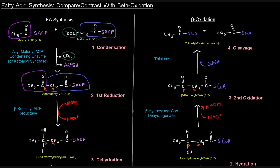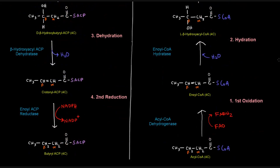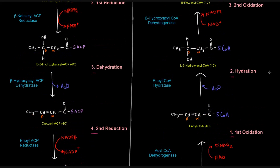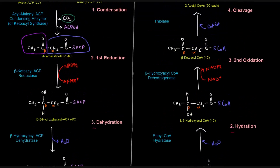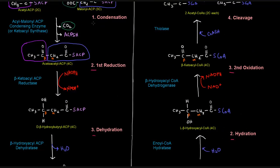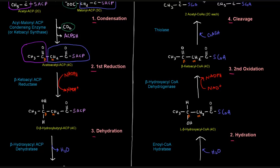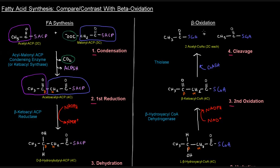Notice, for instance, that the result of fatty acid synthesis is we have an acyl-ACP, whereas in beta-oxidation, we start with an acyl-CoA. The difference in terms of the structures is just right here — it's still a thioester linkage, just to a different thing. We've already mentioned the differences associated with the oxidation-reduction reactions — the reductions in fatty acid synthesis and the oxidations in beta-oxidation, the dehydration in fatty acid synthesis versus the hydration in beta-oxidation, and the condensation reaction in fatty acid synthesis versus the cleavage in beta-oxidation.